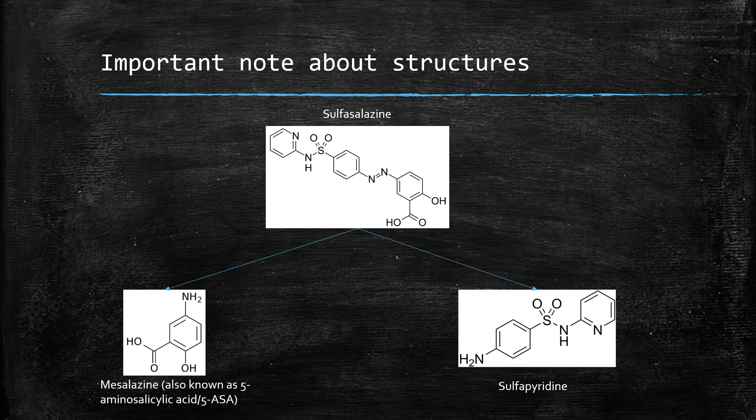Olsalazine is two mesalazines joined together, and balsalazide is just another pro-drug of mesalazine.